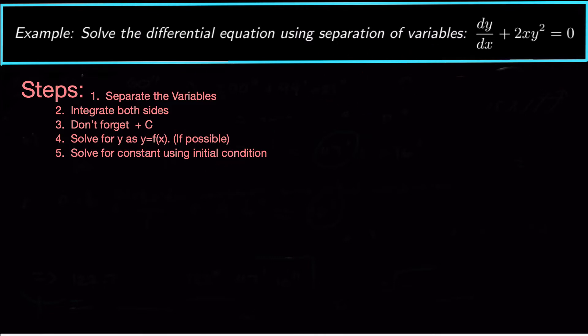So let's try to go through these steps here. Let's separate the variables first. The way we're going to do that is we're going to first start by saying dy dx is equal to negative 2xy squared. And now what we can do is multiply by dx over here and divide by y squared. So we can get dy over y squared equals negative 2x dx. Alright so we've got our variables separated. Step one check.